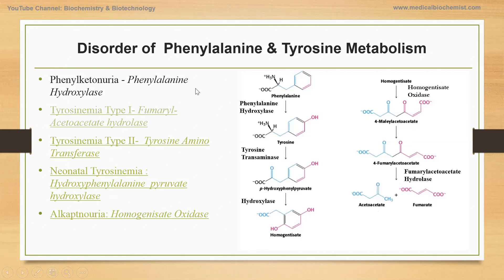In this presentation we'll be discussing the different types of tyrosinemias: type 1, type 2, type 3, neonatal tyrosinemia, and alkaptonuria. The first is tyrosinemia type 1, which is caused by the deficiency of fumarylacetoacetate hydrolase. The deficiency of this enzyme blocks the conversion of fumarylacetoacetate to acetoacetate and fumarate.